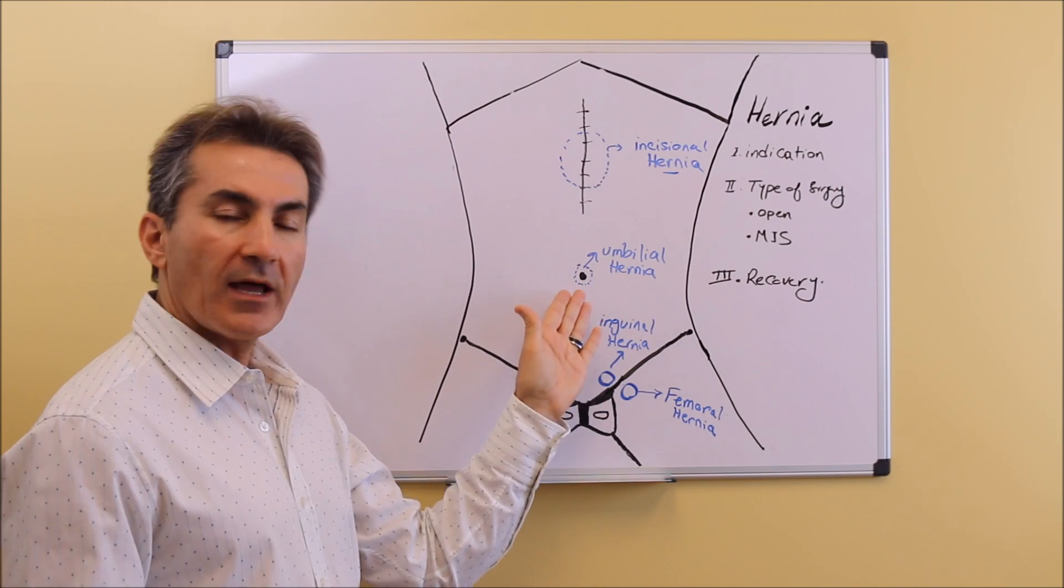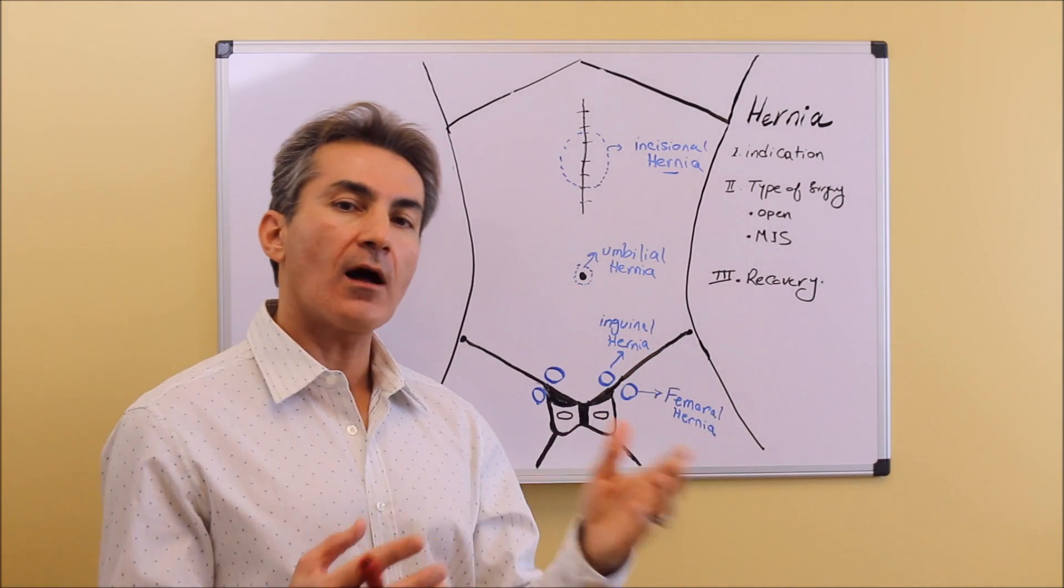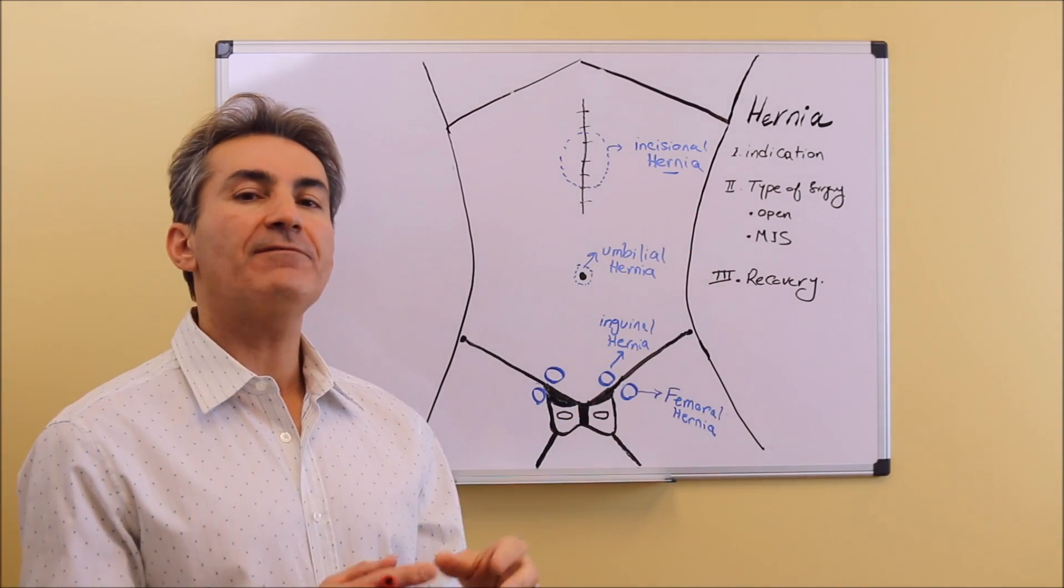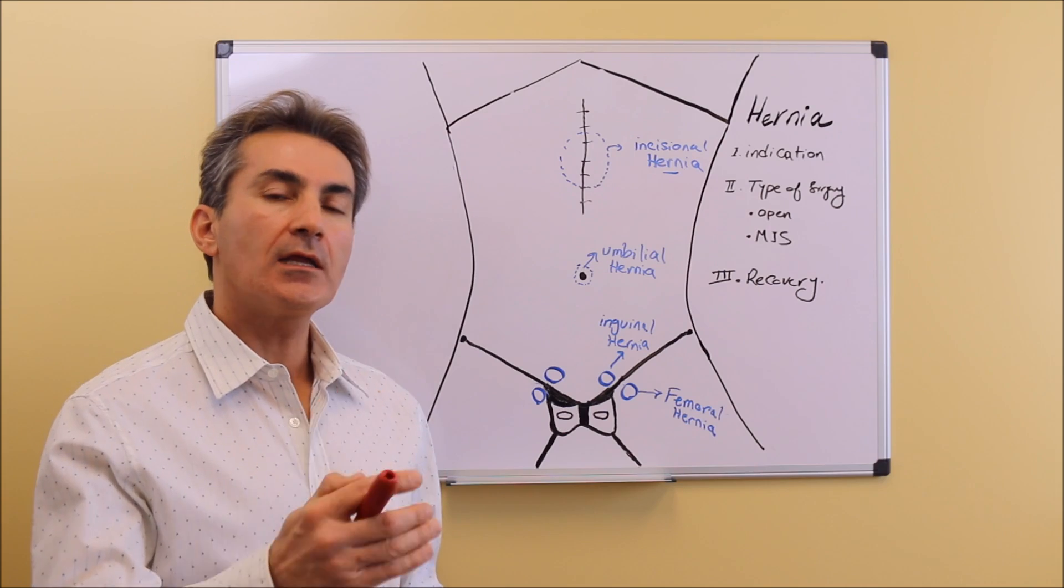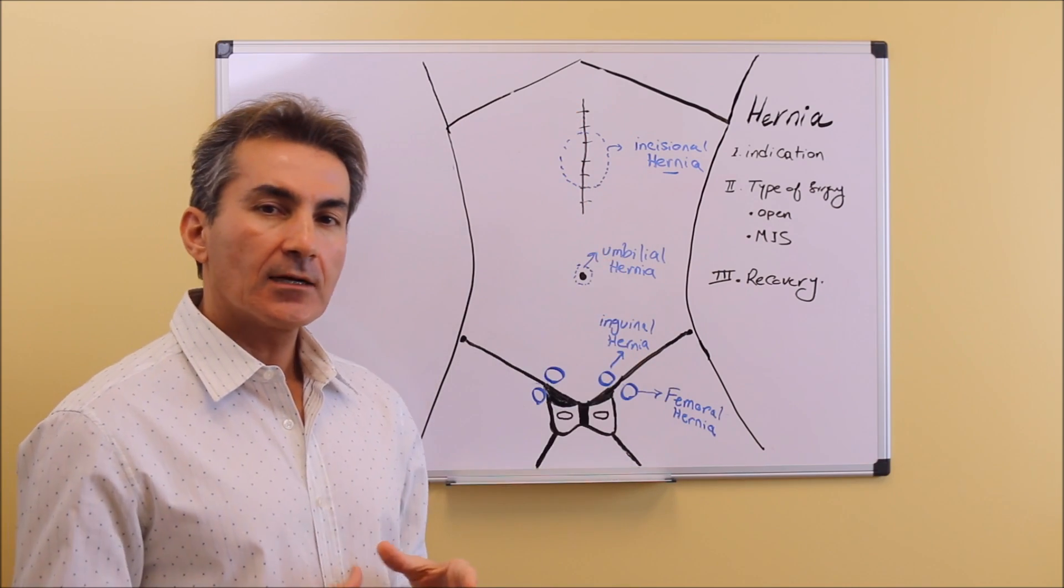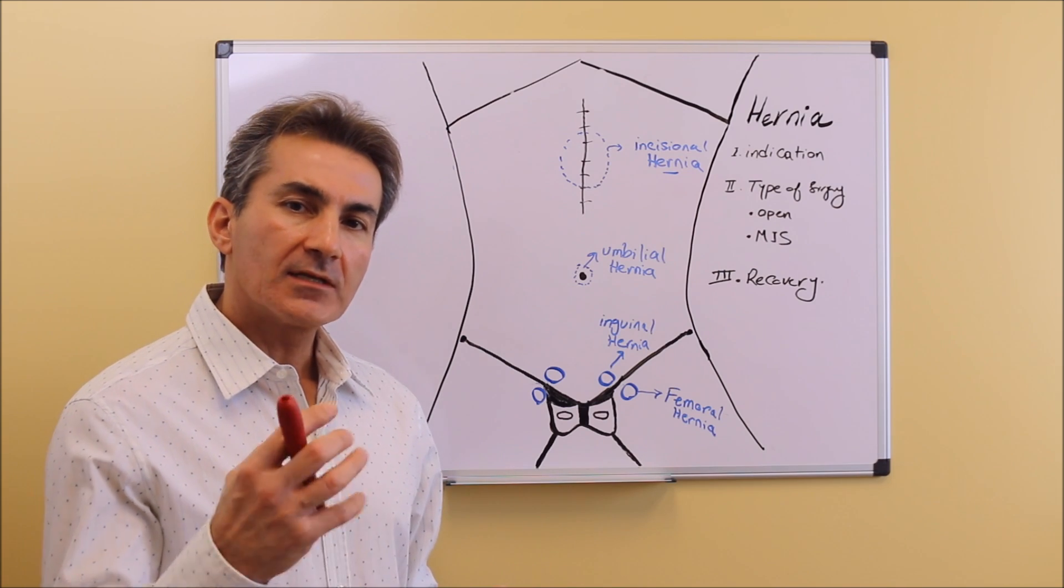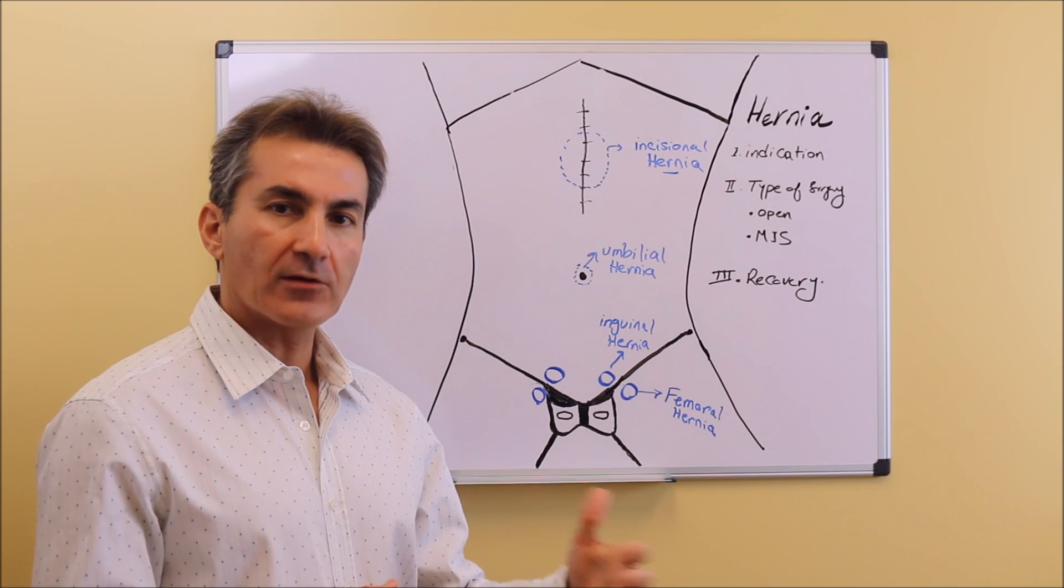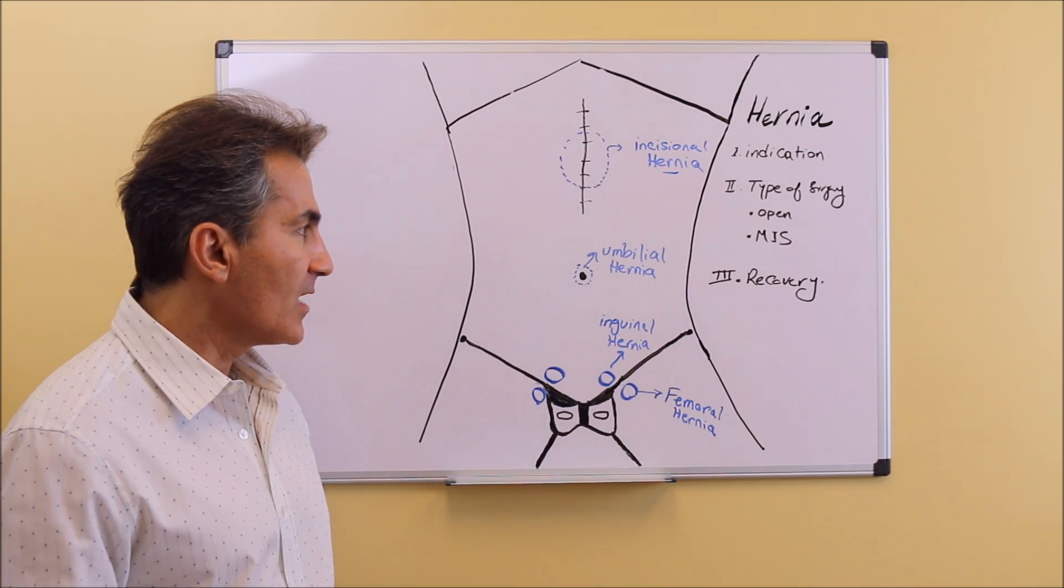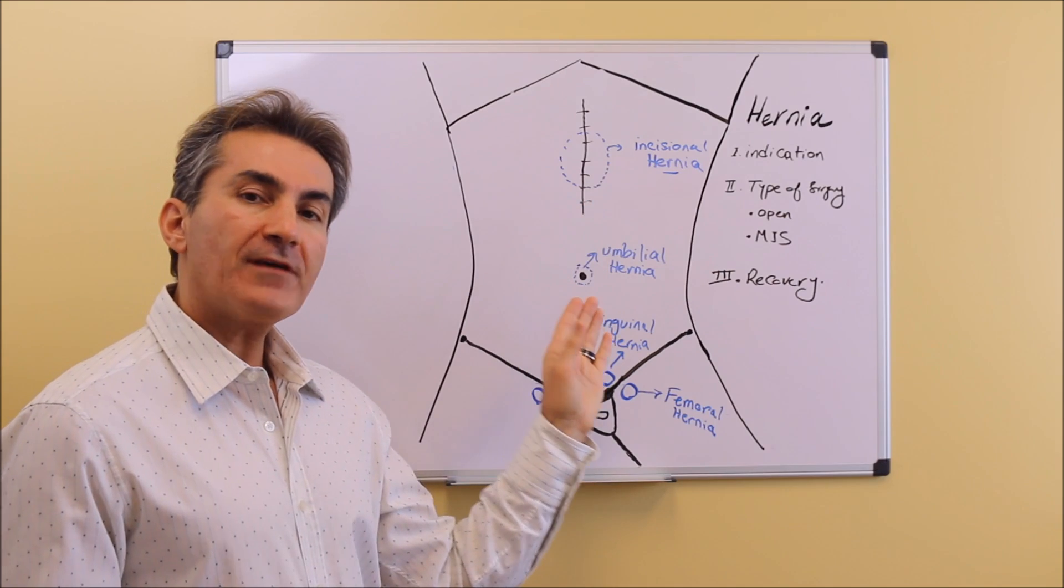We have incisional hernia which is a defect that happens after any type of open operation with a large incision that creates weakness of the abdominal wall. People later develop different sizes of hernia which we call incisional hernia. The way we fix these hernias are very different with different types and options of surgery.